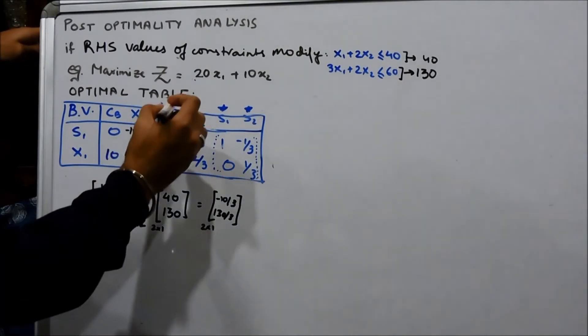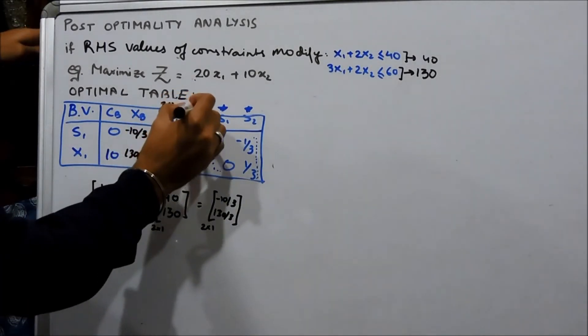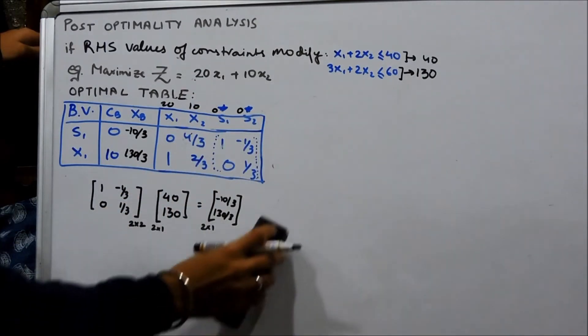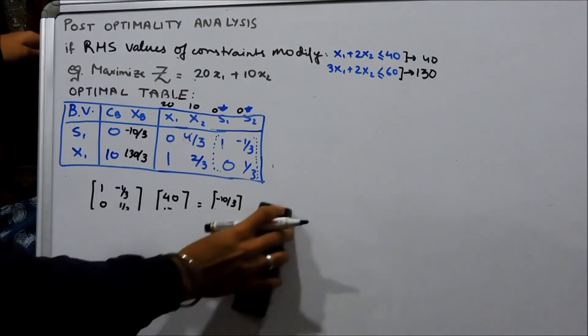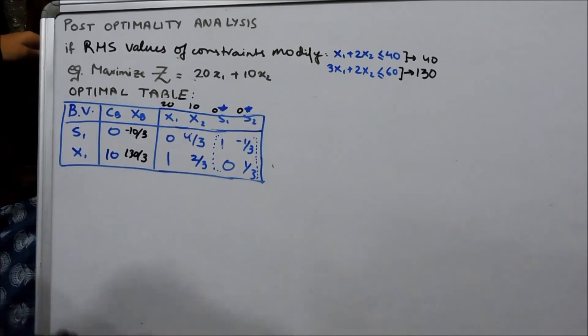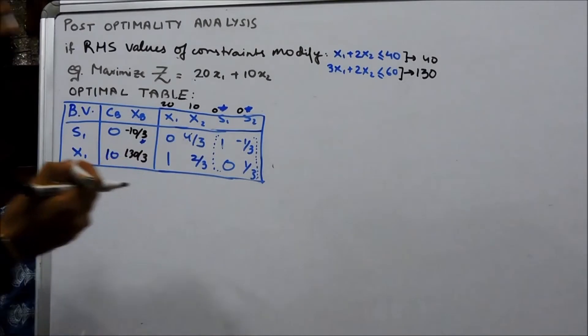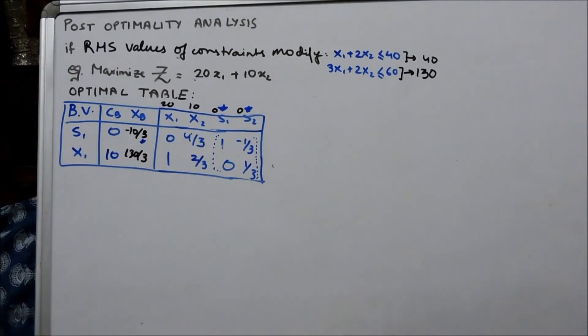So, again, we have 20, 10, 0, 0. We need to calculate delta J's but as you can see, this here is negative which causes infeasibility. And when this kind of thing happens, we need to resort to dual simplex method.